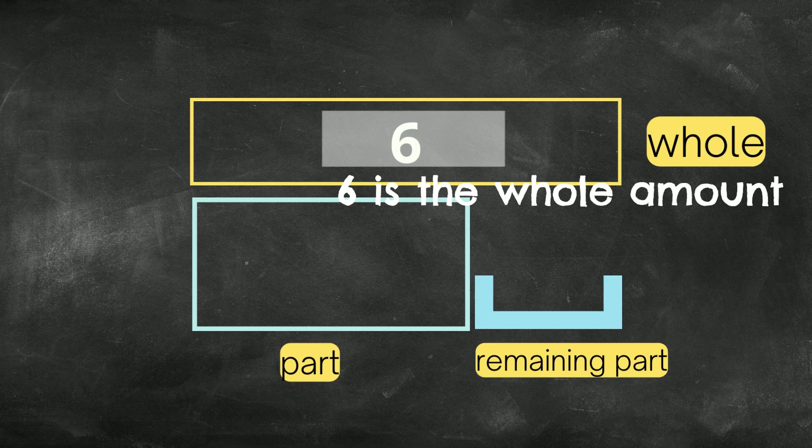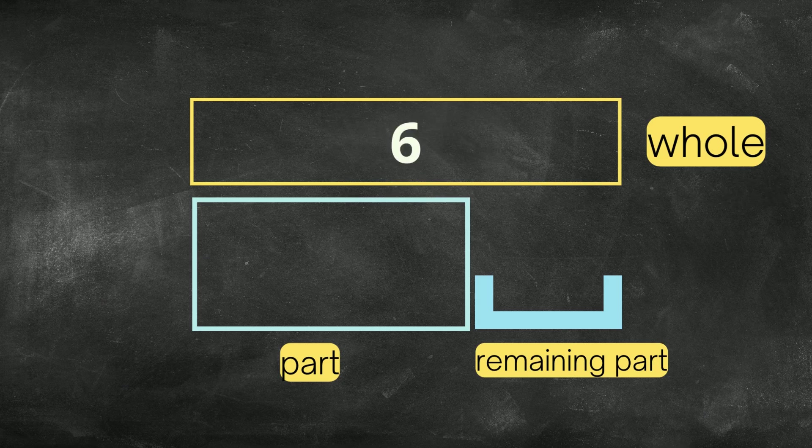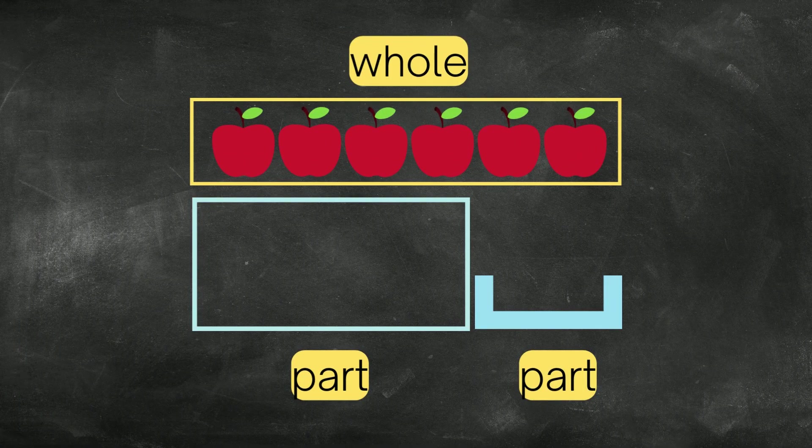So the second part of this problem says that Jim gives 4 apples away. When you give away, this is subtraction, right? That's a keyword.